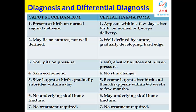Caput succedaneum is largest at birth and gradually subsides, whereas cephalohematoma appears after birth and usually disappears within six to eight weeks to a few months. Caput succedaneum is not associated with any skull fracture, whereas cephalohematoma is most probably accompanied by a linear skull bone fracture. In both cases, no treatment is required.